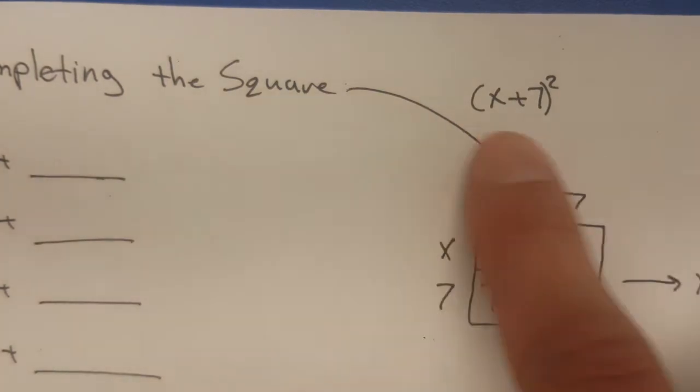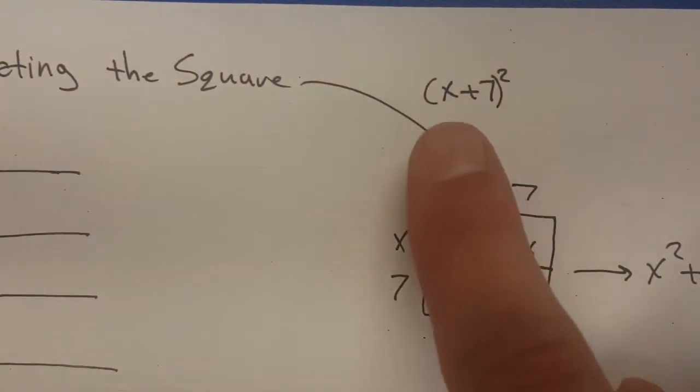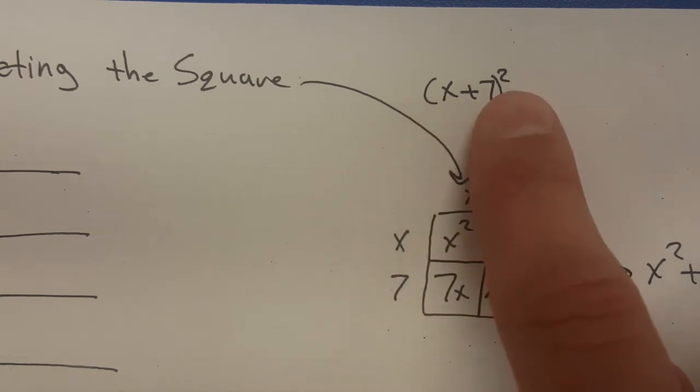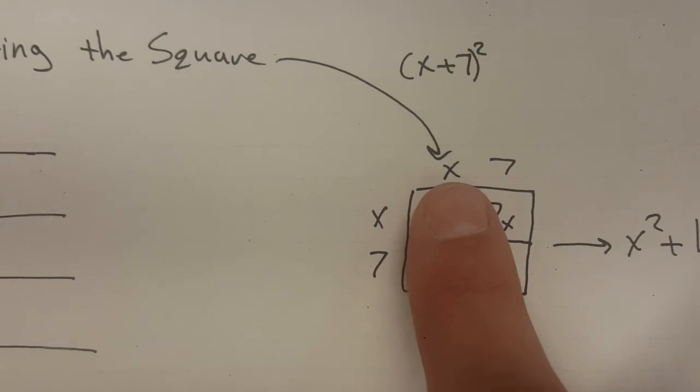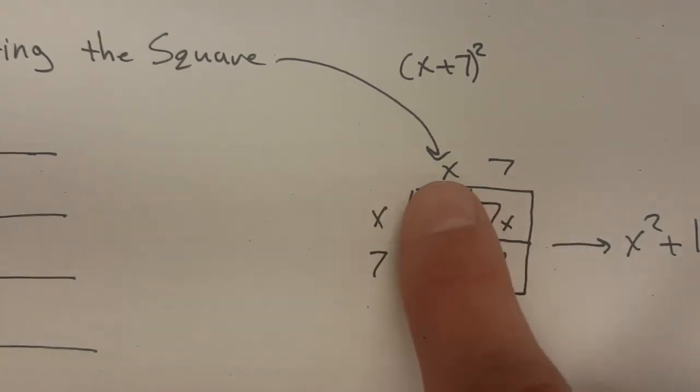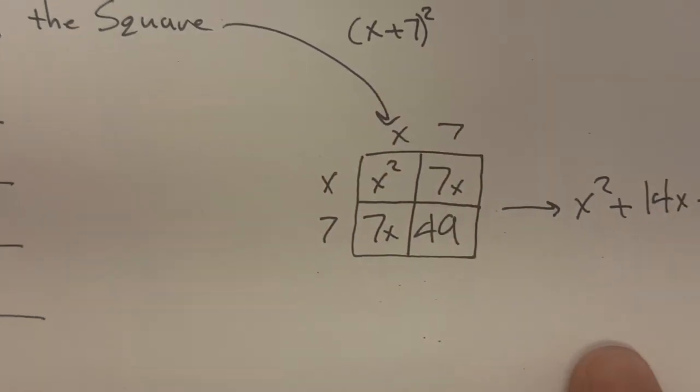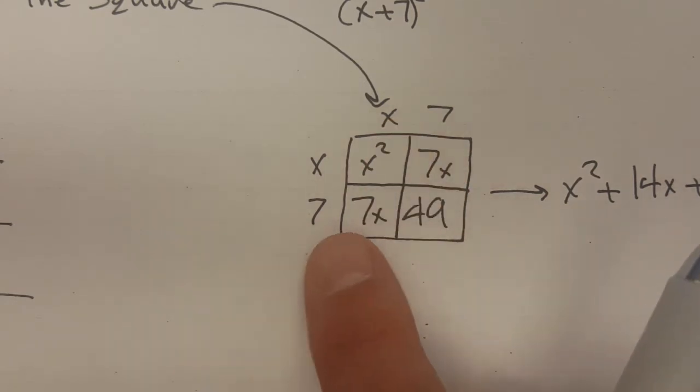So completing the square, what are you talking about? Well, we're talking about those perfect square binomials. Remember, when you take a binomial times itself, like x plus 7 squared, that really means x plus 7 times x plus 7. So when you take a binomial times a binomial, remember we'd use a 2 by 2 poly box. So there's the x squared, there's a single 7x, there's another 7x, and there's a 49.